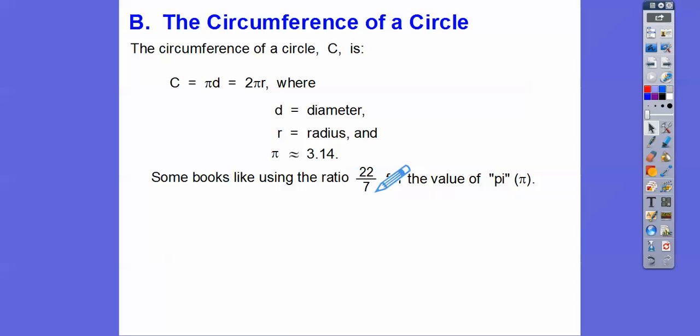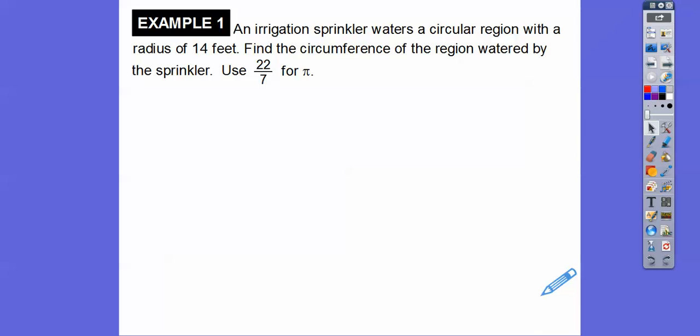Excuse me. I like using pi when you get into later math, higher math classes. Pi is an exact answer. This is an approximate answer. This is an approximate answer also. But 22 divided by 7 is about 3.14 and some change. All right, so here we go.